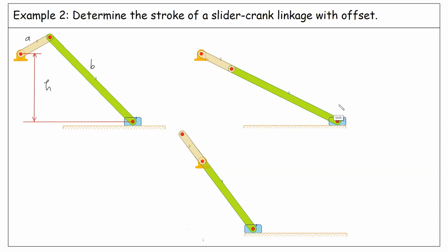In this extreme position, we have A plus B. If we consider a triangle here, this side is A plus B. This side is the offset H. And we can compute this side using the Pythagorean theorem, which becomes the square root of A plus B squared minus H squared.